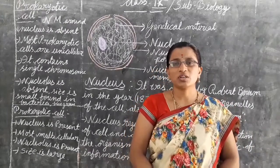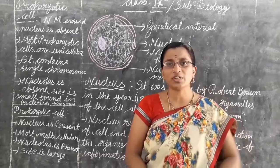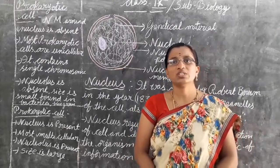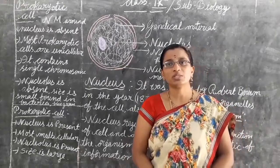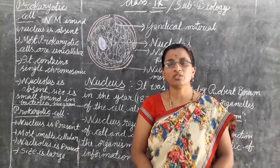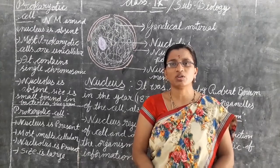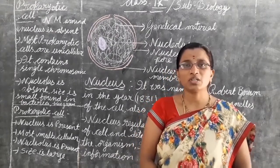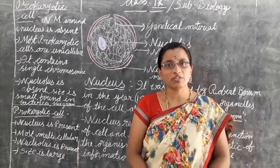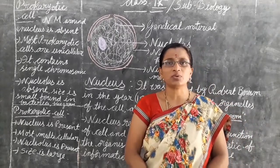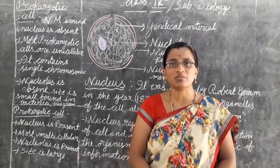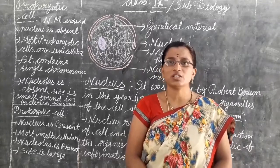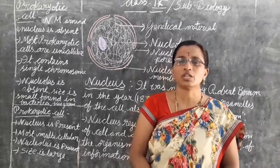Endoplasmic reticulum which has granules on its surface — those granules are called ribosomes. That type is called rough endoplasmic reticulum. The type which does not have granules on its surface is called smooth endoplasmic reticulum. Endoplasmic reticulum manufactures and transports substances from one cell to another.